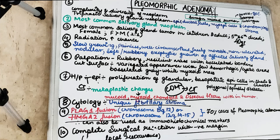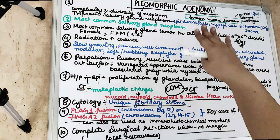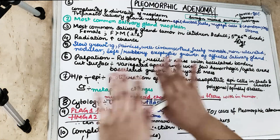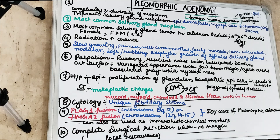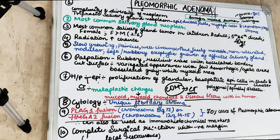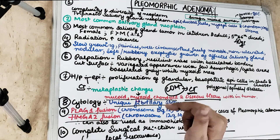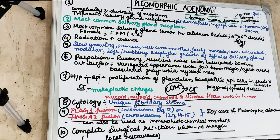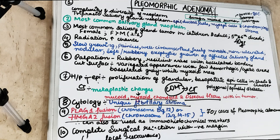Always remember that pleomorphic adenoma is a benign mixed tumor. It can involve any salivary gland — major or minor. The diversity of the neoplasm includes metaplastic changes: mucoid, myxoid, chondroid, and osseous tissues present within the connective tissue of the tumor. I hope you enjoyed the video. If you liked it, give it a thumbs up, comment below, and check the description box for support links. Keep reading, keep learning, stay motivated — I will see you soon in the next video.